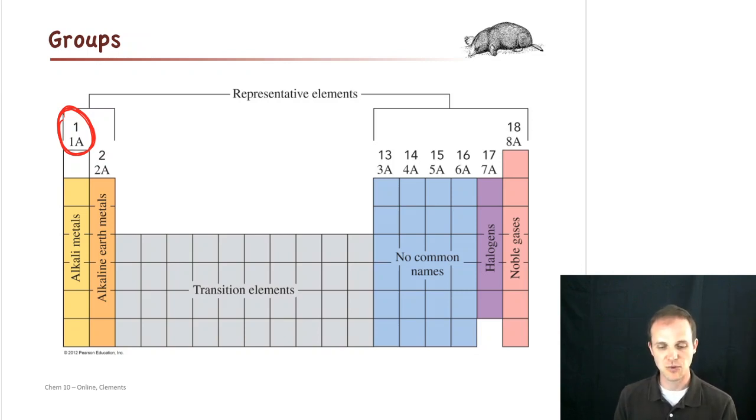And I just put that on there because you'll see that occasionally. But when we talk about it, we'll talk about group one, group two, group three, group four, and things like that. And you can see over the way on the right-hand side, the noble gases are group 18.